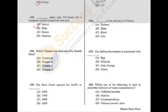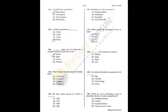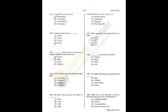Question 134: Vitamin K was discovered by Henrik Dam in 1943, for which he got a Nobel Prize in Medicine — A is the correct answer. Question 135: The Suez Canal opened for traffic on November 17, 1869 — A is the correct answer.